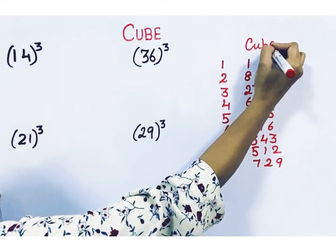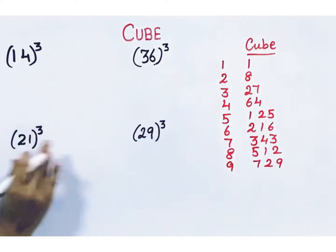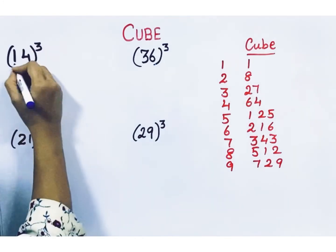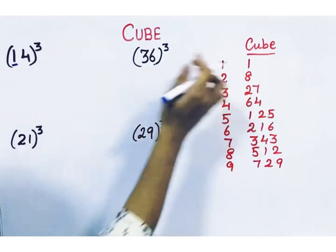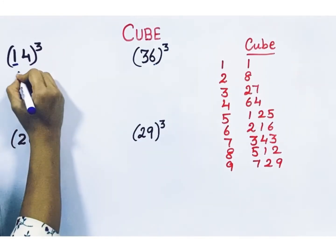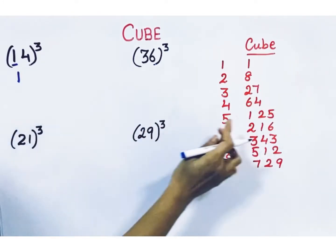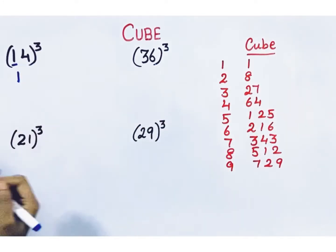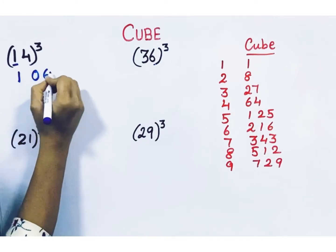Now let's find out the cube of these numbers. First it's 14. Take 1 and cube it — 1 cube is 1. Then 4: 4 cube is 64. While writing 64, write it as a 3-digit number: 0, 6, 4.